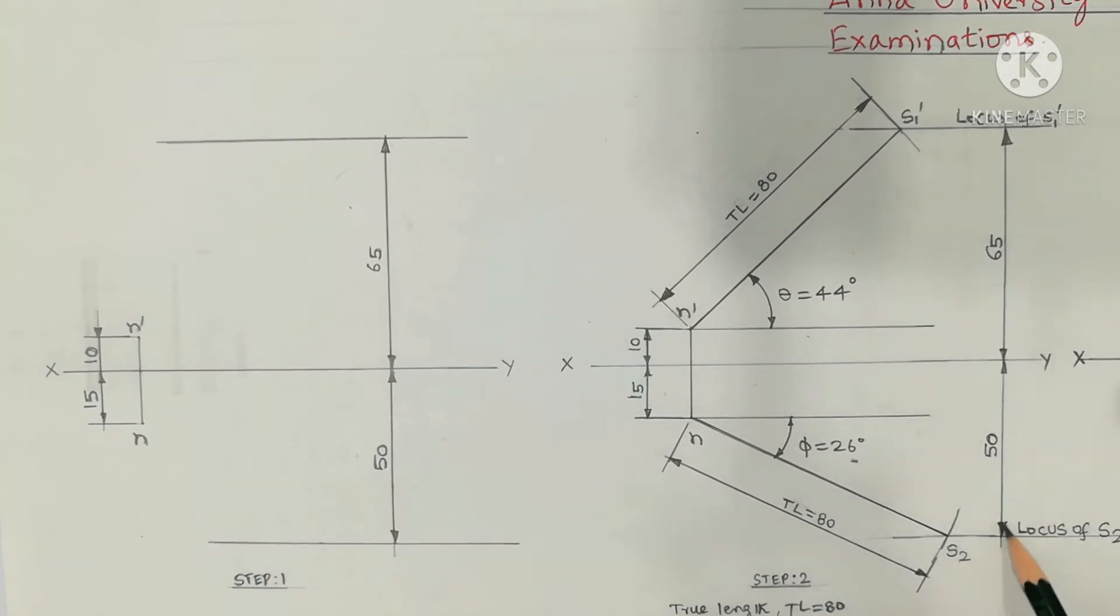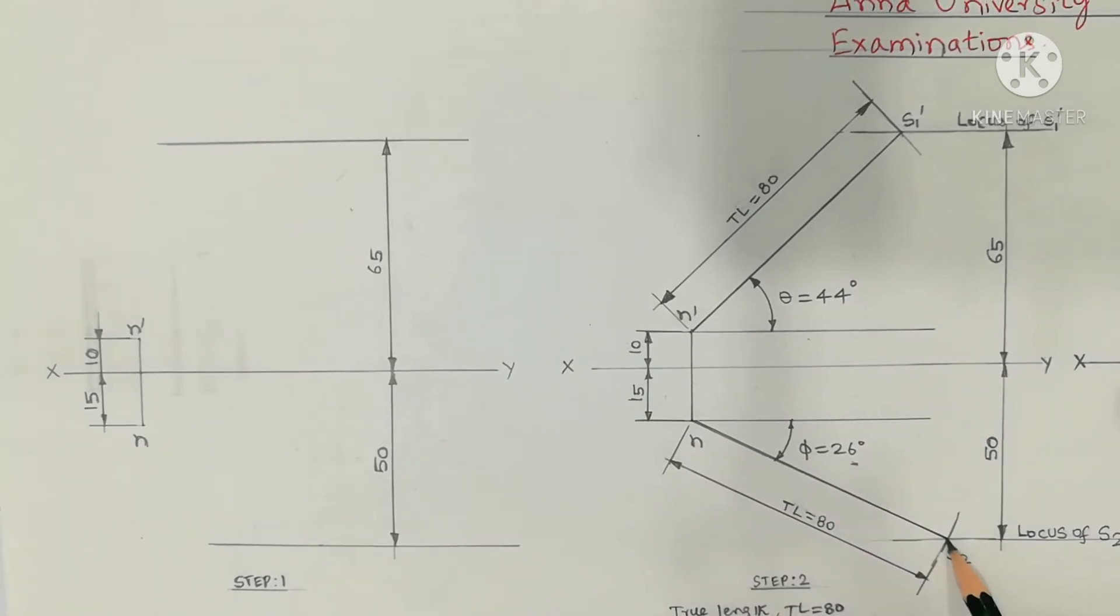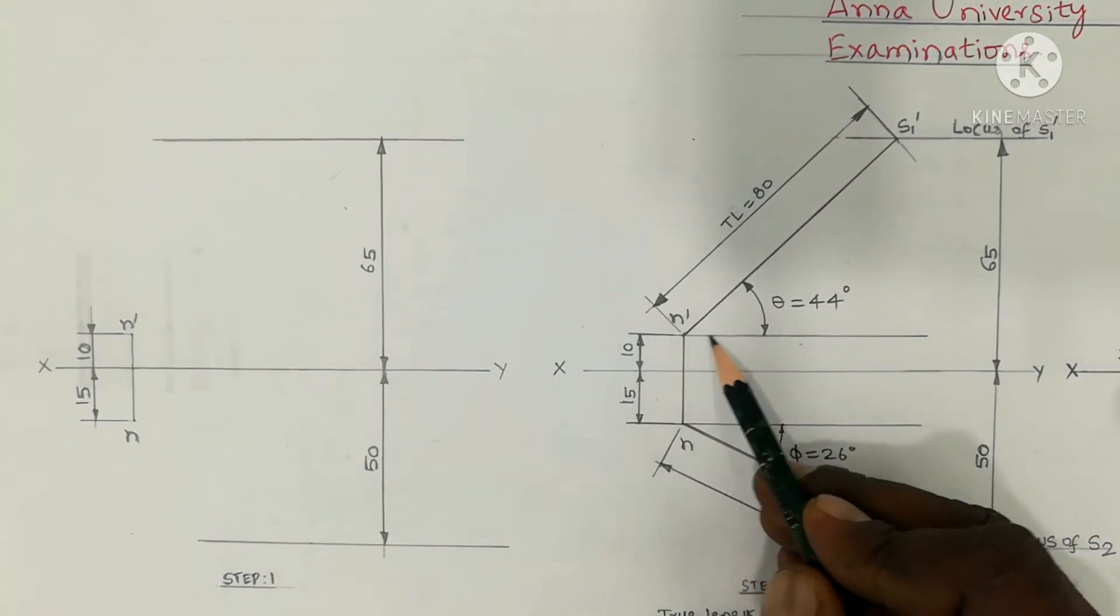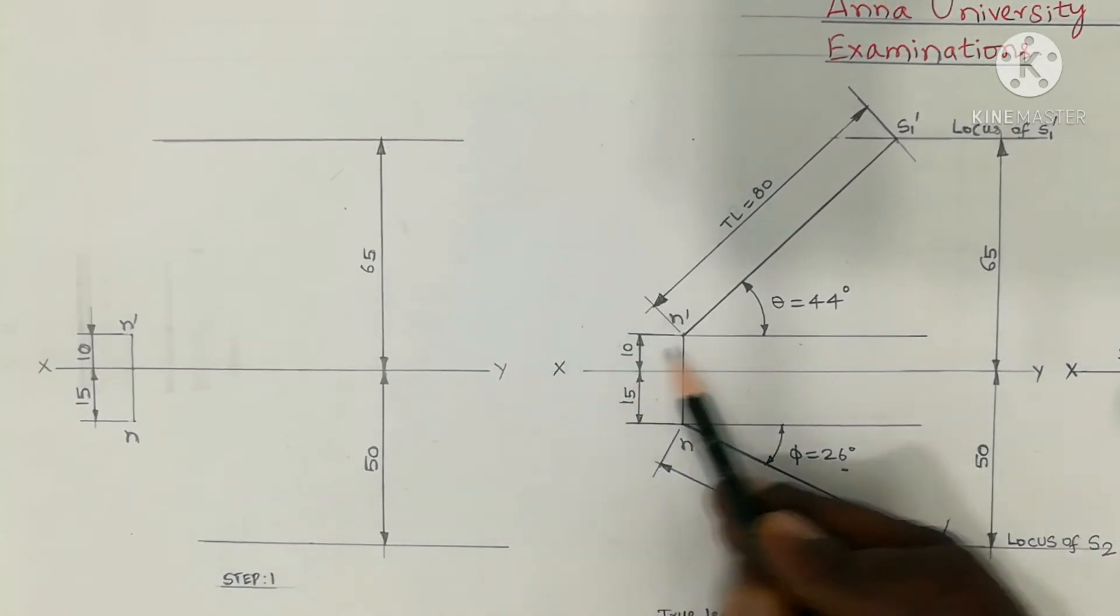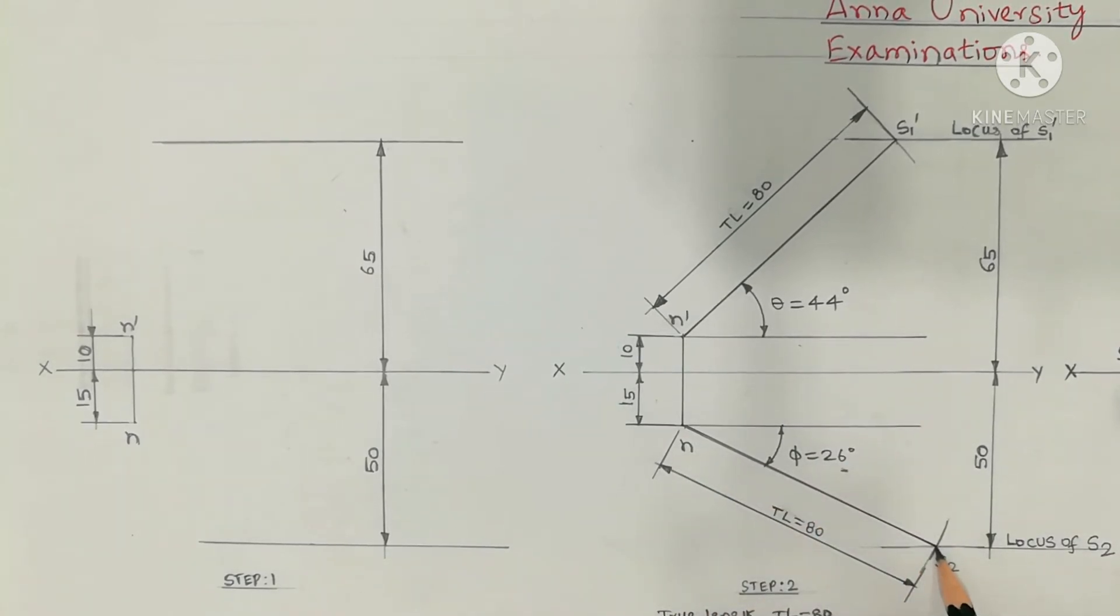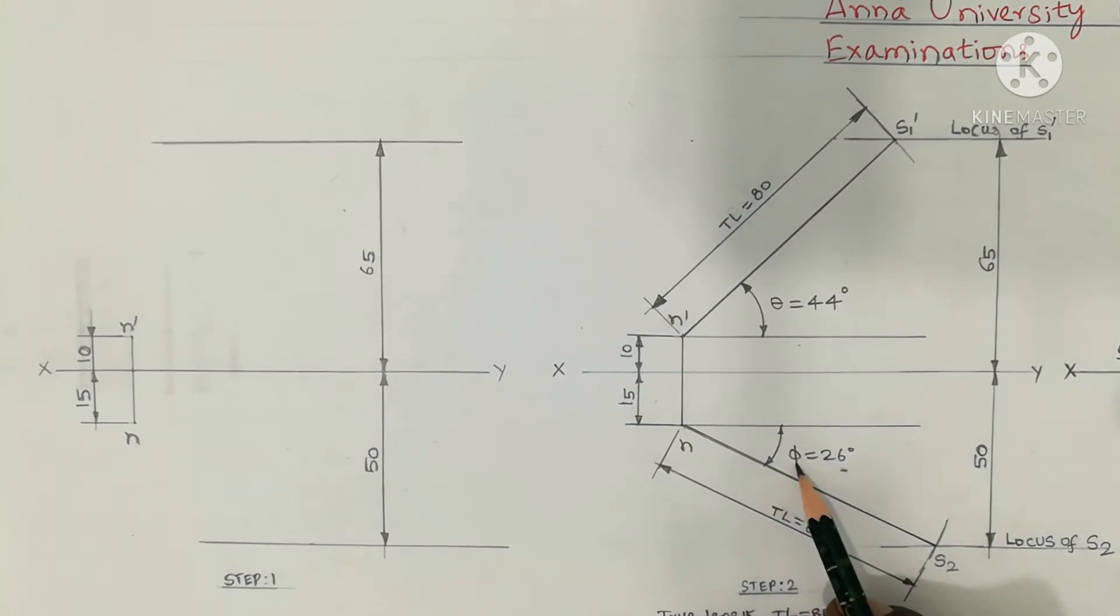50mm below the x-ray line, the arc cuts the line at S2. Mark the point. Join N and S2. This is true inclination line. Now we have theta and phi angles. Theta is true inclination with HP, that comes above the x-ray line. And NS2 is the true length of the line. This angle is phi, the angle inclined to VP.